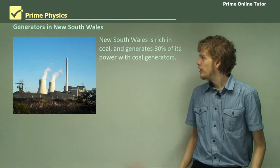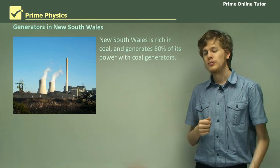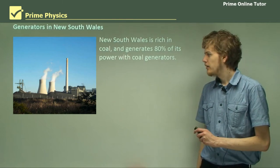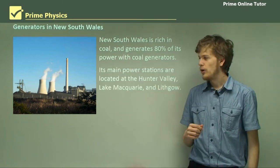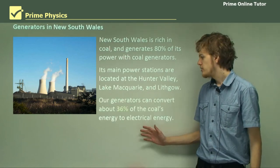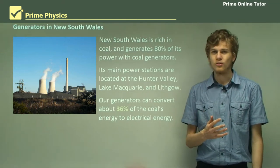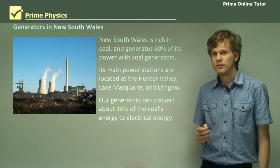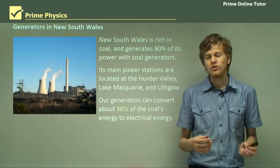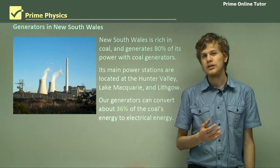In New South Wales, we use a lot of coal to generate power. In fact, 80% of the power generated in New South Wales is generated by coal generators. The main power stations are located in Hunter Valley, Lake Macquarie, and Lithgow. Our generators can convert about 36% of the coal's energy to electrical energy, which doesn't sound like a huge amount, but by burning coal we produce enormous amounts of energy, so we still have a lot of electricity to go around.